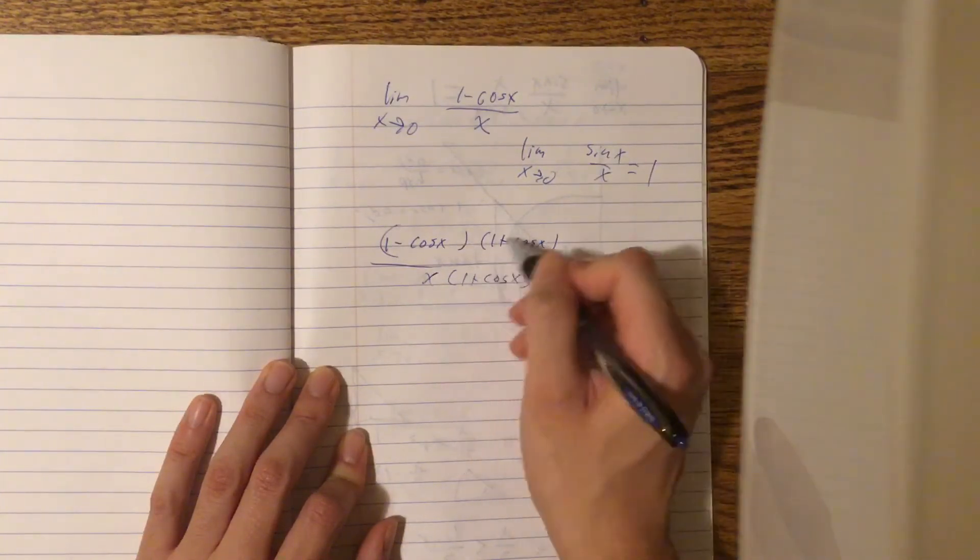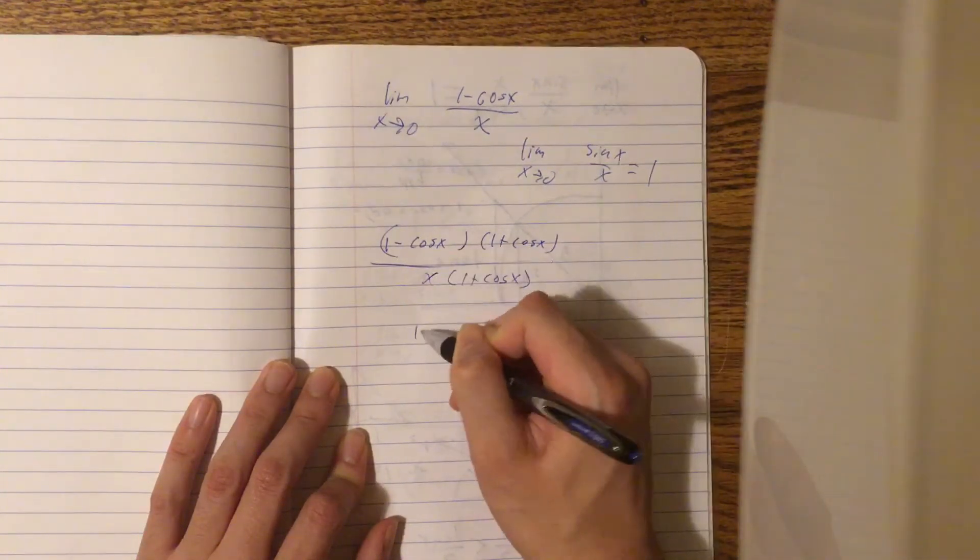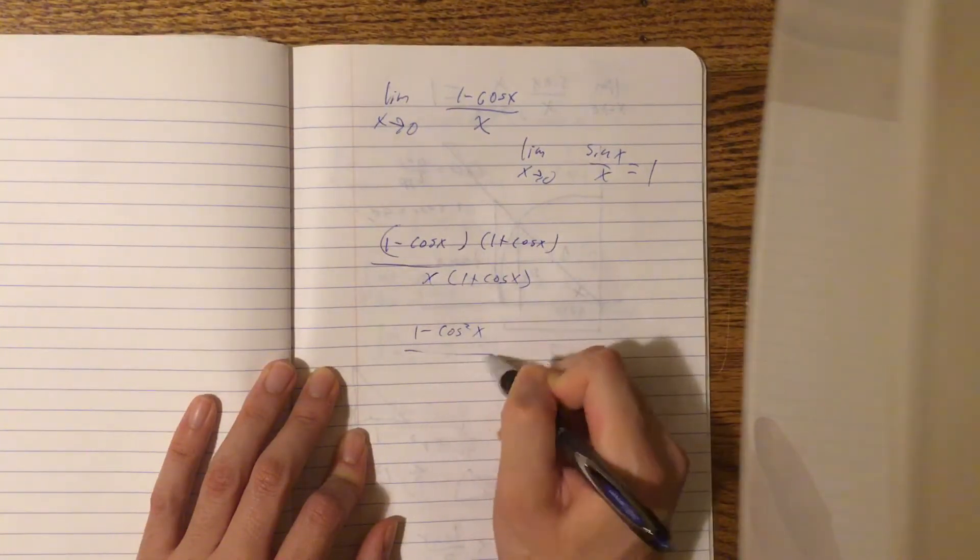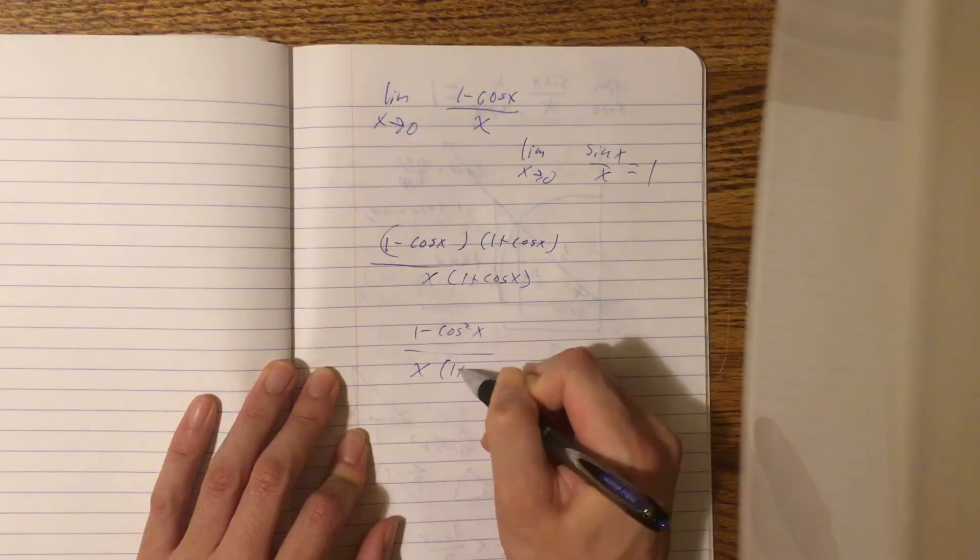Now if we distribute, we get on top 1 - cos²x. And on the bottom, let's keep it as x(1 + cos x).